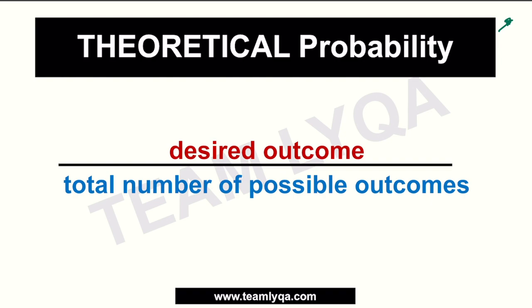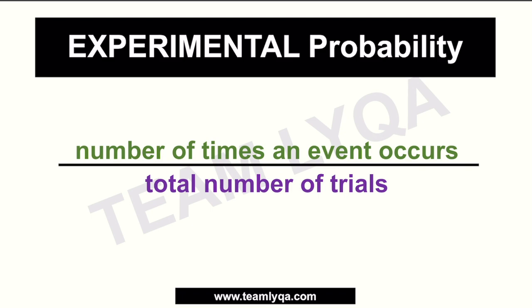Pero ngayon, hindi yung theoretical probability ang pag-uusapan natin. Pagdating kasi sa theoretical probability, ang inahanap natin ay kung ano yung posibleng mangyari based doon sa mga options or doon sa bilang ng mga possible outcomes. Pero pagdating sa experimental probability, ang tinitingnan na natin ay yung number of times na an event actually occurs over the total number of trials. Ibig sabihin, meron kang talagang ginawa na experiment — sinubukan mong mag-roll ng die o mag-flip ng coin, binilang mo talaga yung mga nanalo sa isang raffle. Ito yung mga bagay na ginagawa bago natin makuha yung figures pagdating sa experimental probability.